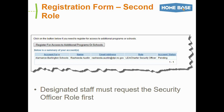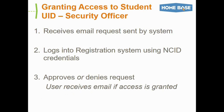For site security officers, once you've been granted access, you can go back into the registration system and click the button at the top that says 'register for access to additional programs or schools' so that you can be on the list to approve incoming registrations for the various schools or charter schools that fall inside your LEA. When people in your LEA register for access to the UID system, you'll receive an email of the request. You can then log into the registration system, review the list of pending registrations, and either approve or deny them. The system then sends an automated email back to the registrant letting them know if they've been granted access.